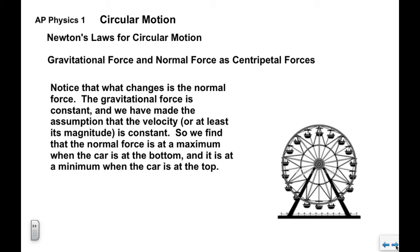You can see that what happens here is as the Ferris wheel turns, what changes in terms of the people in the cars is the normal force. The gravitational force is constant and the magnitude of the velocity is constant as it turns. So we would find that the normal force is at a maximum when the car is at the bottom and it's at a minimum when the car is at the top. You can just take the force equations and solve them for FN.